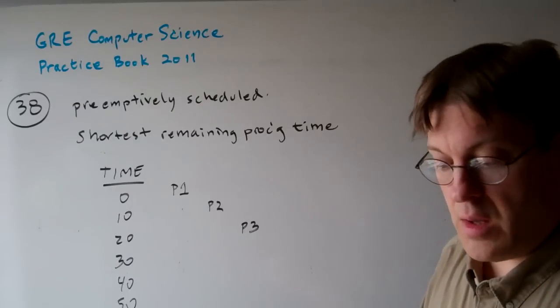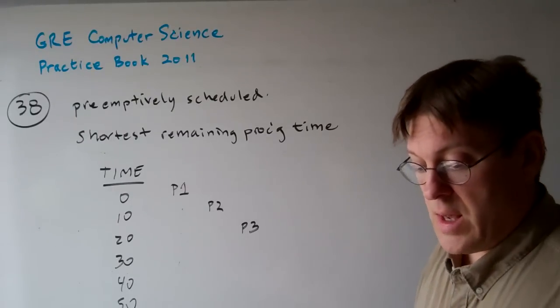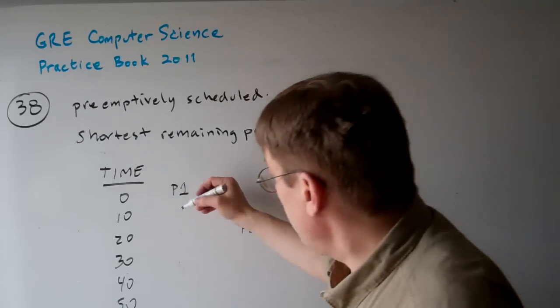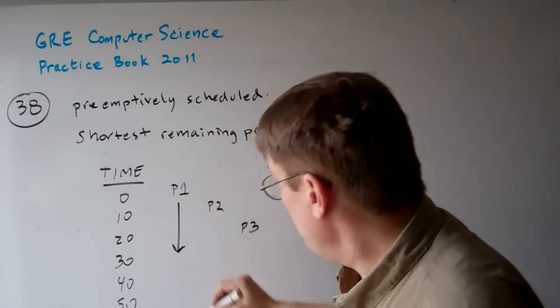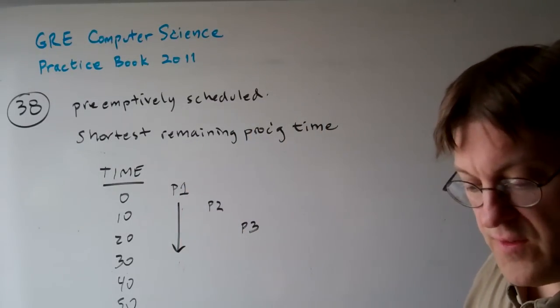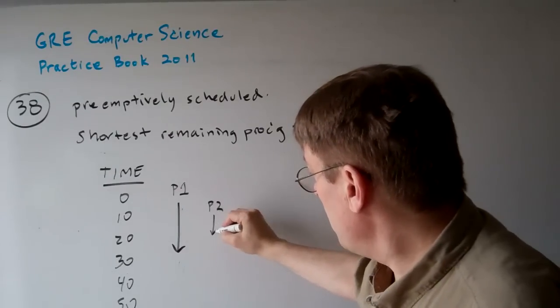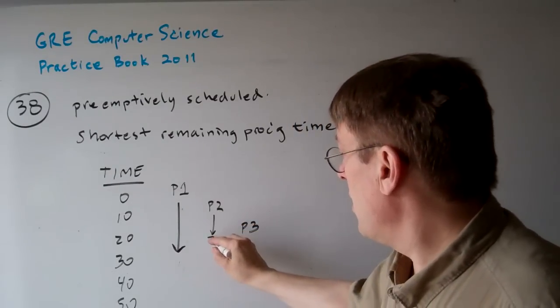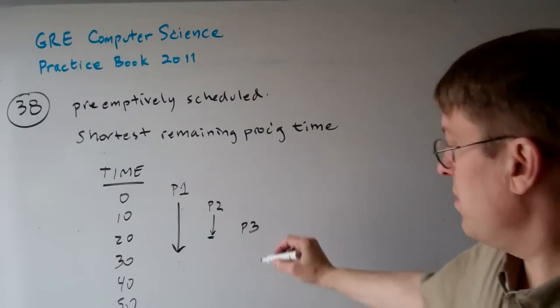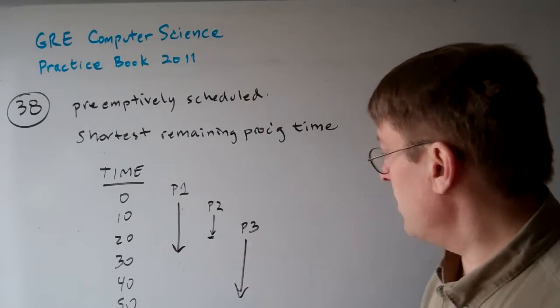Now what are the processing times? Well, P1 is 30, that's going to take us down to 30. P2 is 15, so even though it started at 10, it's going to end up here at 25. And P3 is also 30, that's going to take us down to 50.